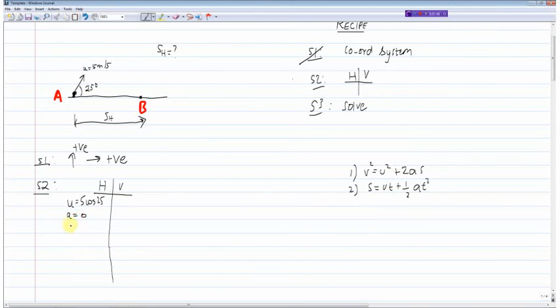Looking at equation one over here on the right hand side, this means that since a equals zero, we can say v equals u. Looking at equation two, we can say the horizontal displacement is equal to ut. So that's basically the horizontal variables defined.